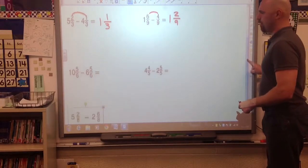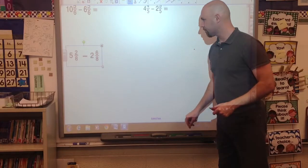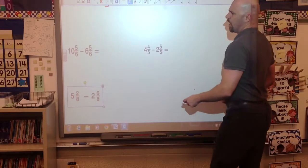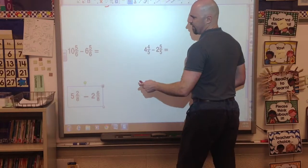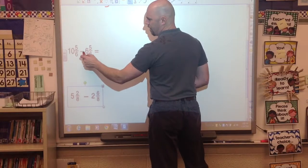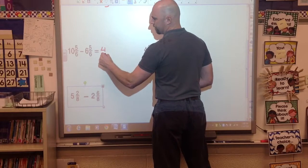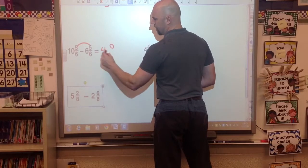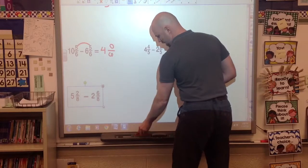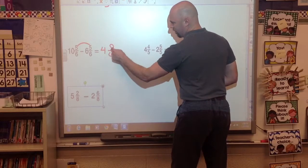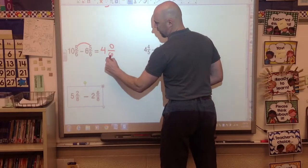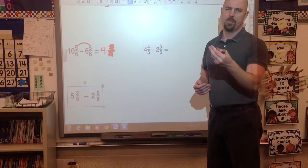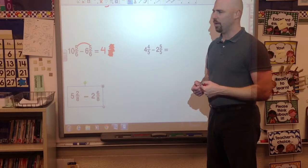Let's take a look at another mixed number problem. How about 10 and 5/6 minus 6 and 5/6? Well, let's look here. 10 minus 6 is 4. 5 minus 5 is 0. The denominator is the same. And in this case, what we're going to do here, we're just going to eliminate this. When we go to the store, I don't say, here's $4 and 0 cents back. I just say, here's your $4 back. So that's what we're going to look for there.